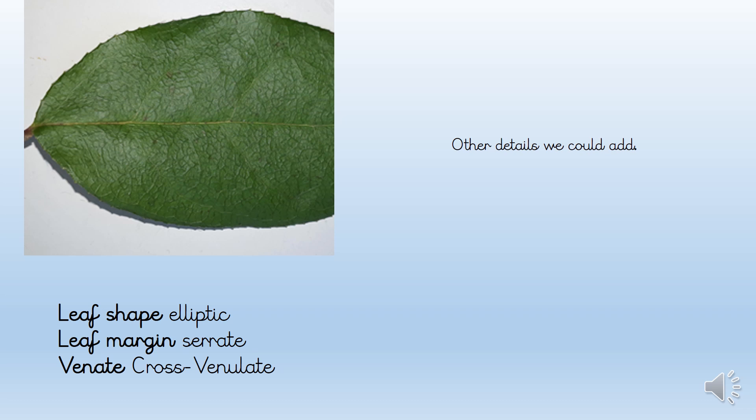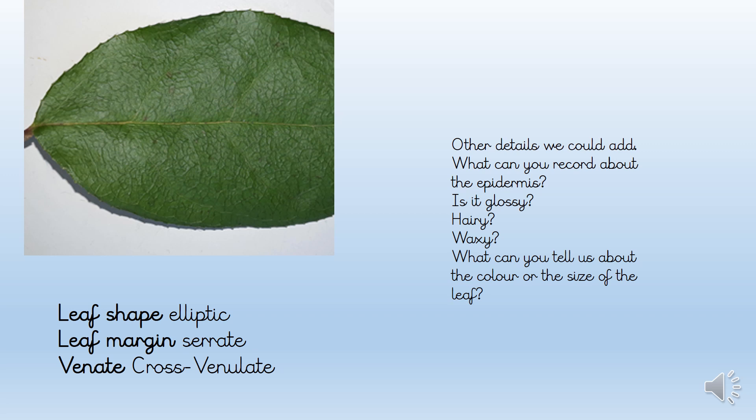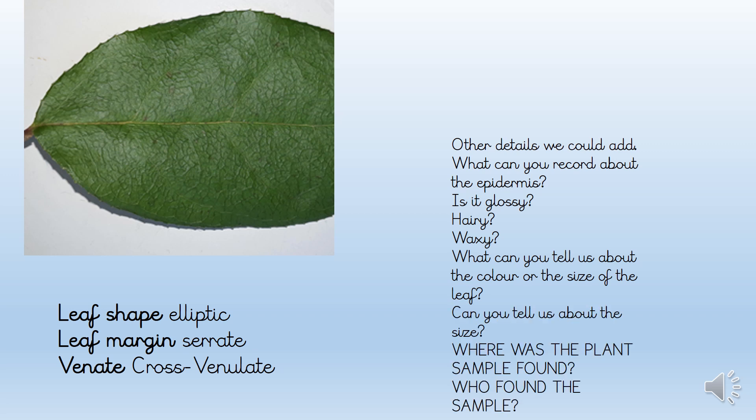What other details could we add about our leaf? Don't forget to say whether it's compound or simple. We could also talk about the epidermis — the scientific name for the skin. If you pick a leaf yourself you could see it might be glossy, hairy, or waxy. This one was quite a glossy leaf. What could you tell us about the size or colour? And where was the sample found — somewhere sunny, rocky, or underneath other trees?